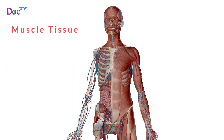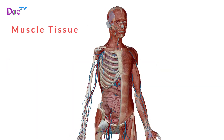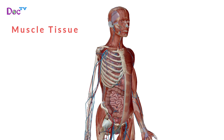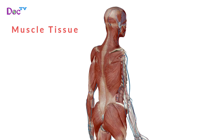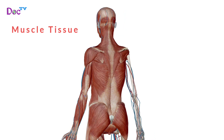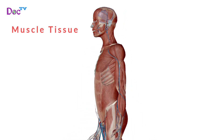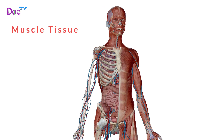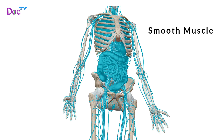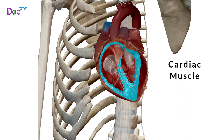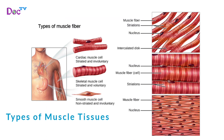Muscle tissue consists of cells known as muscle fibers. The three types of muscle tissue in the body are skeletal muscle, smooth muscle, and cardiac muscle.